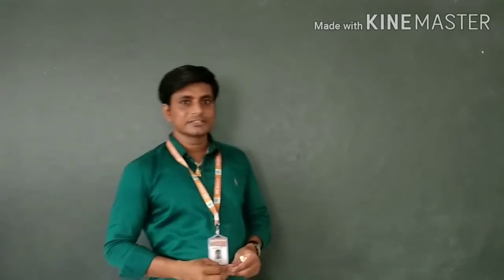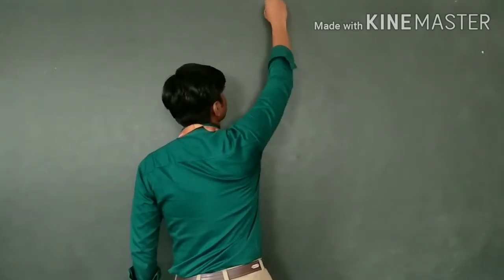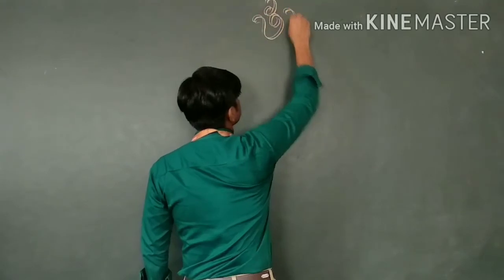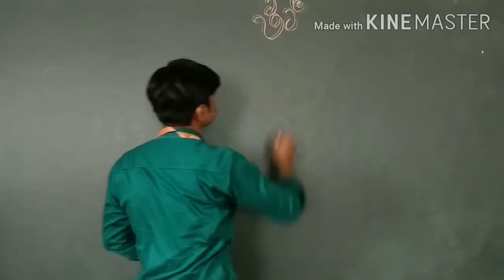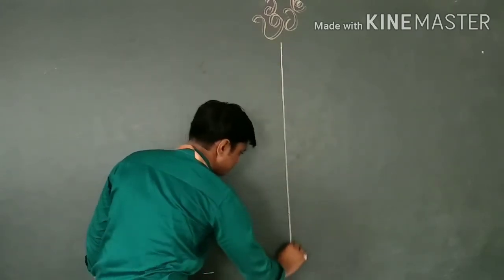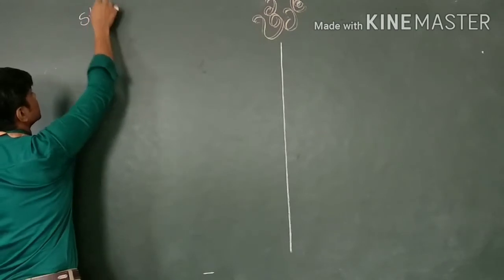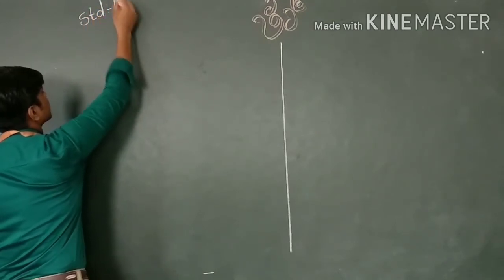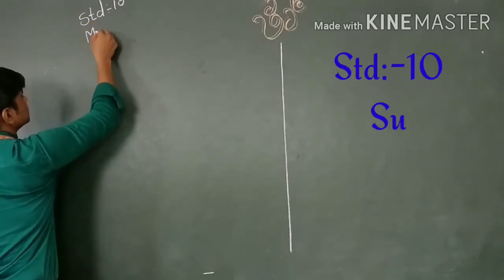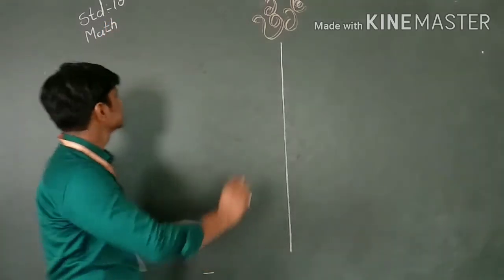Today our topic is how we find zeros of a polynomial. Without wasting our time, let's start. Standard mathematics, second chapter.